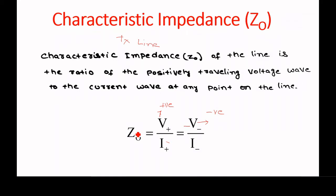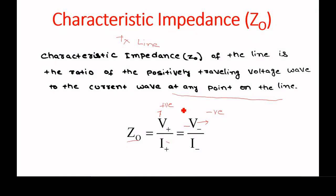The important point to understand is that at any point on the line, wherever you measure the ratio of forward travelling voltage to the forward wave current, or the reflected wave voltage to reflected wave current, it will give you the same value. It will give the same result for the forward wave as well as for the reflected wave, anywhere on the line.